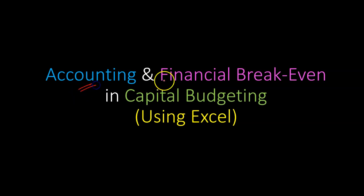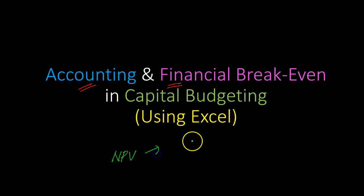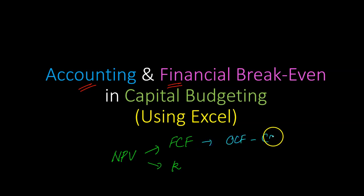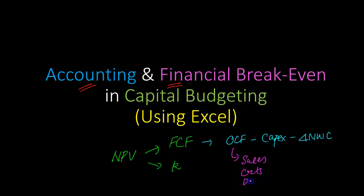I'm going to talk about accounting and financial break-even in the context of capital budgeting. In a standard capital budgeting exercise, we calculate net present value. The NPV of any investment depends on two main things: the financial cash flows of that investment and the discount rate or required rate of return. Financial cash flows depend on operating cash flow, capital expenditures, and changes in net working capital. Operating cash flow in turn depends on sales, costs, depreciation, and taxes.